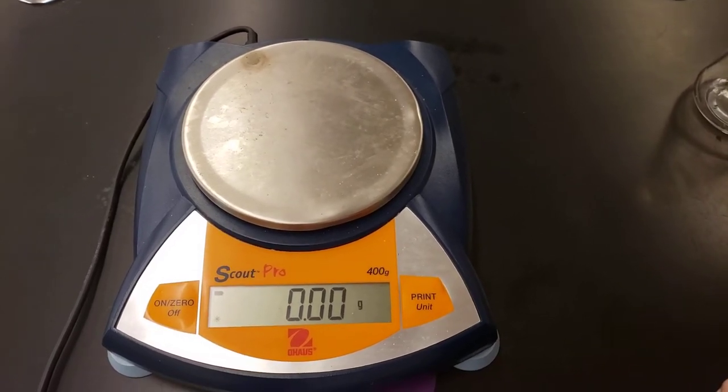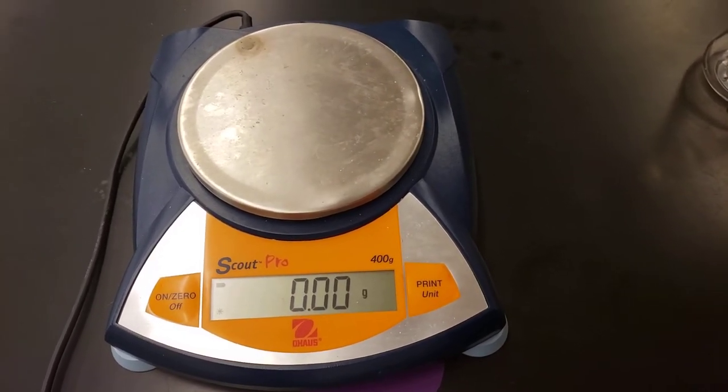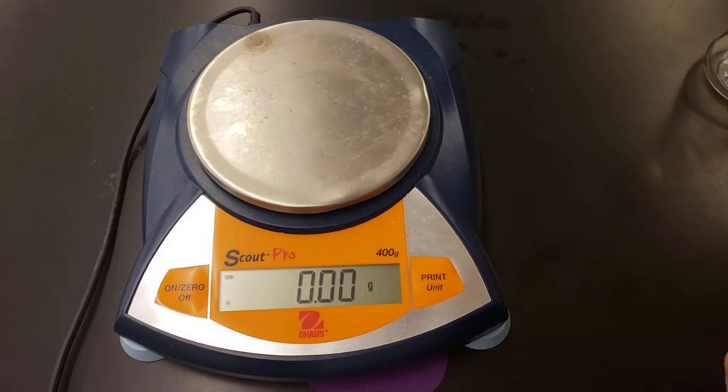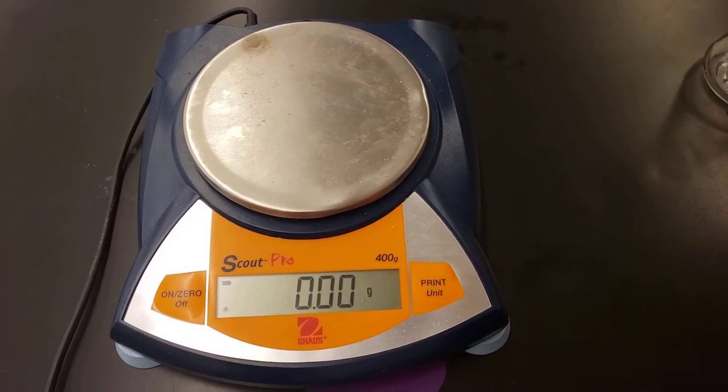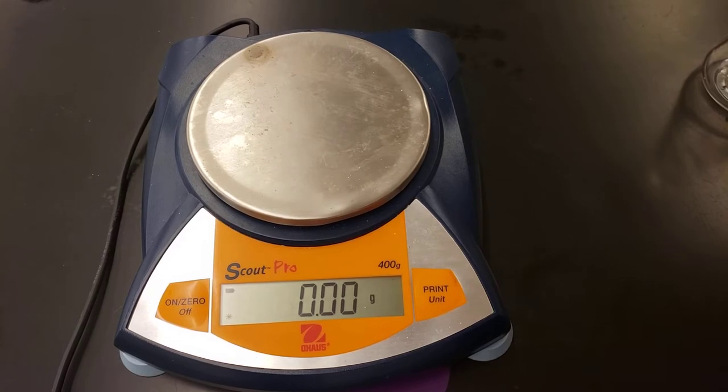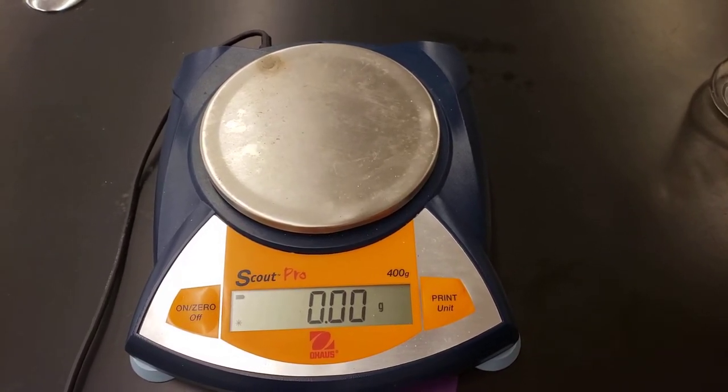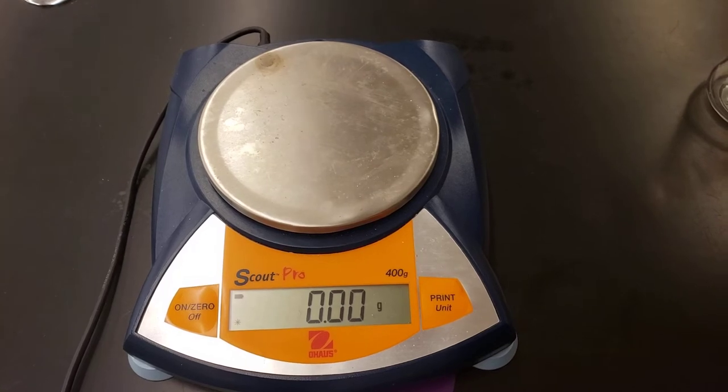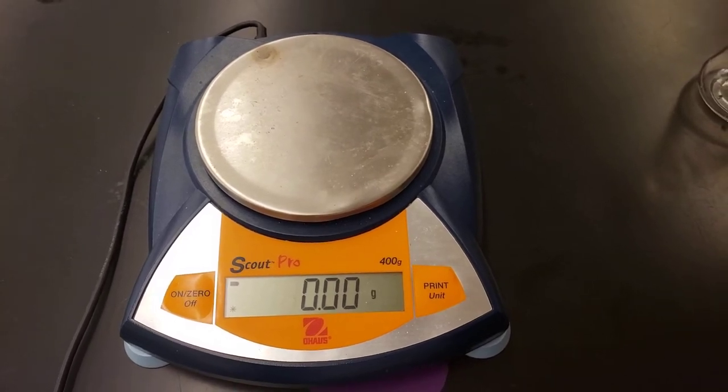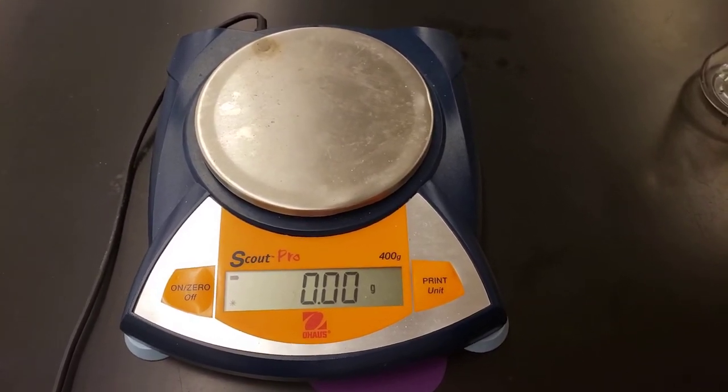Today we're going to be blowing up a balloon using a chemical reaction. We're going to be performing the chemical reaction between baking soda, also known as sodium bicarbonate, and vinegar, also known as acetic acid. Make sure you have already completed your pre-lab questions before watching this video and answering the post-lab questions. Let's get started.